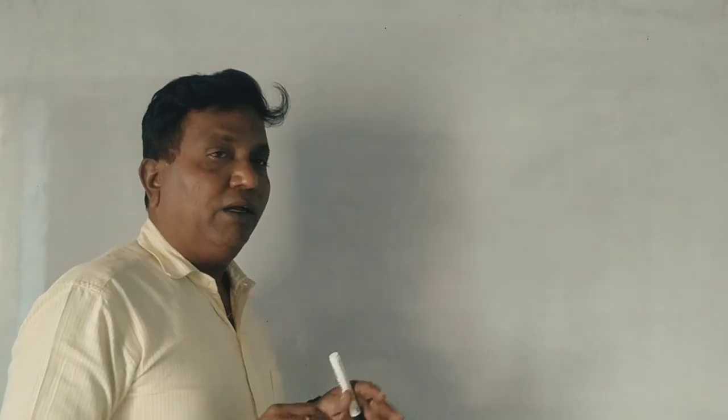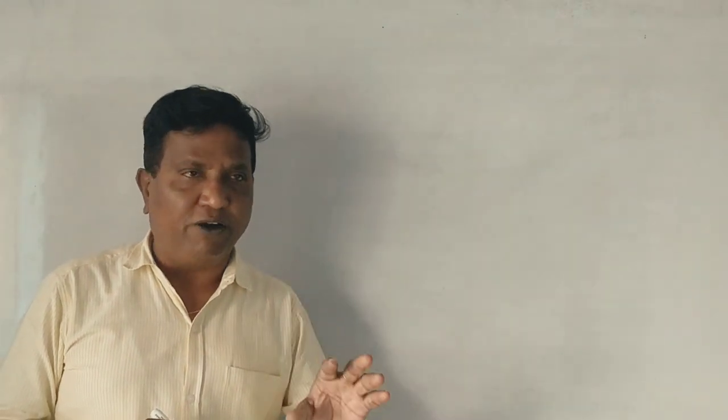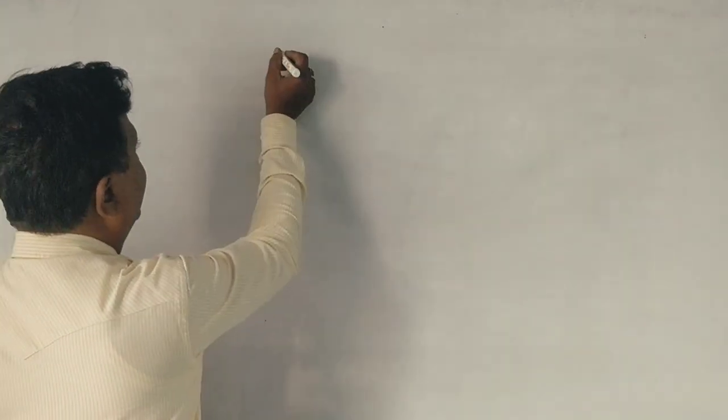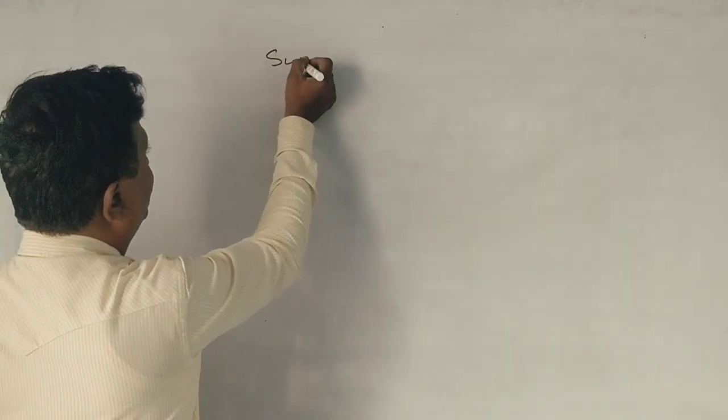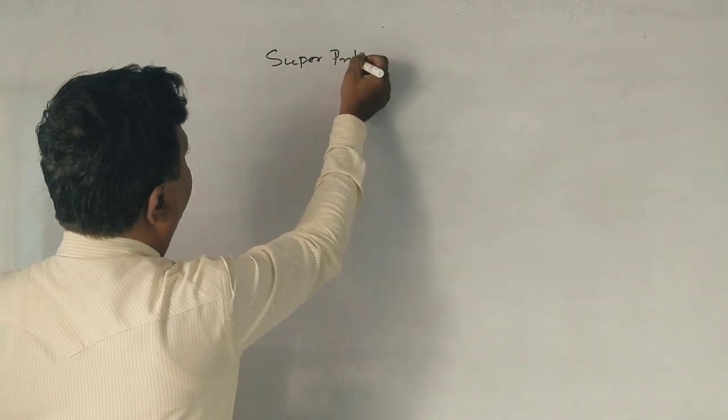Guys, if you want to use the simple average method, you can calculate goodwill. But the weighted average method can also calculate goodwill. However, the weighted average method is a super profit method. Why is it a super profit method? Because the method is a super profit method.